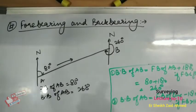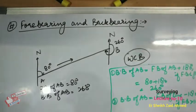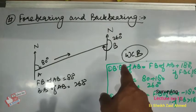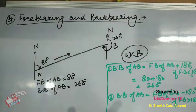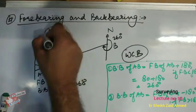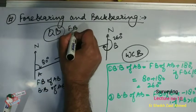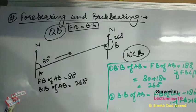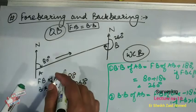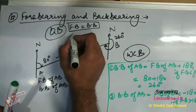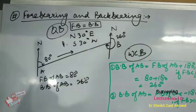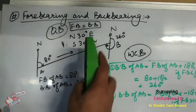In the case of quadrantal bearing, if the forebearing of a line is given, the backbearing is numerically equal to the forebearing. These two formulas work only for whole circle bearing. For quadrantal bearing, the value of forebearing and backbearing are numerically equal, but we have to change North for South and vice versa, and East for West and vice versa. For example, if the forebearing is North 30 degrees East, its backbearing will be South 30 degrees West.